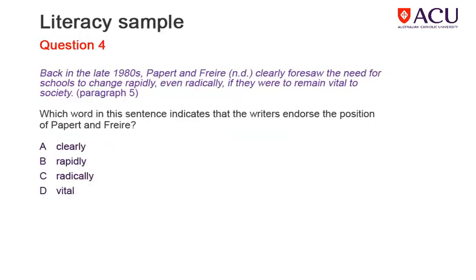This question takes you to paragraph five and a sentence that introduces the quote by Papier and Freya: 'Back in the late 1980s, Papier and Freya clearly foresaw the need for schools to change rapidly, even radically, if they were to remain vital to society.' This question asks students to identify the point of view of the writers — specifically, the word that shows they support the point of view of Papier and Freya. Whilst all the choices would fit, 'clearly' describes a point of view — in this case, it means undoubtedly or obviously. 'Rapidly' describes the rate of change required, 'radically' refers to the manner of change, and 'vital' refers to the relevance of schools. Only 'clearly' reflects the writers' attitudes to Papier and Freya's point of view. Therefore, A is the correct answer.